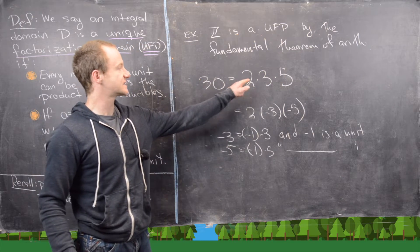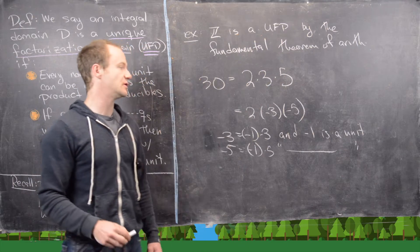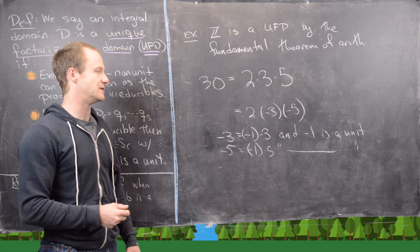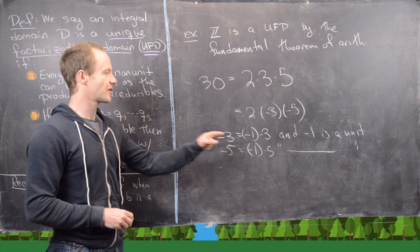So the list 2, 3, 5, and the list 2, negative 3, negative 5 are not the same list, but they're the same up to being a unit.